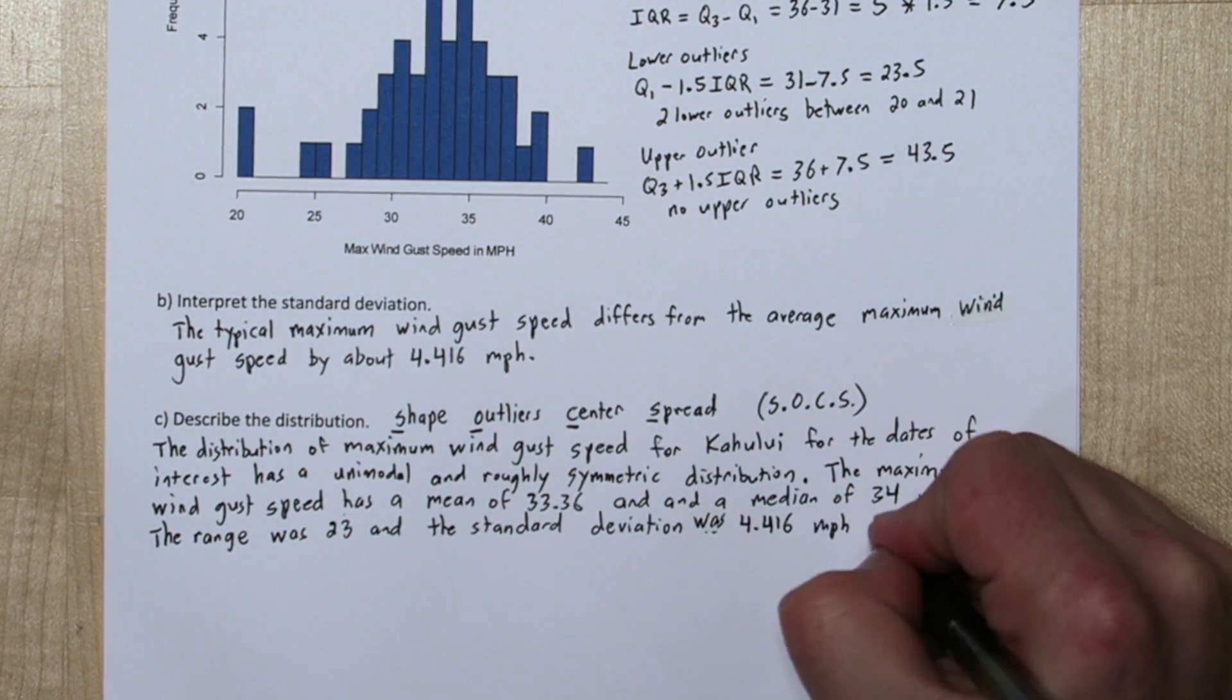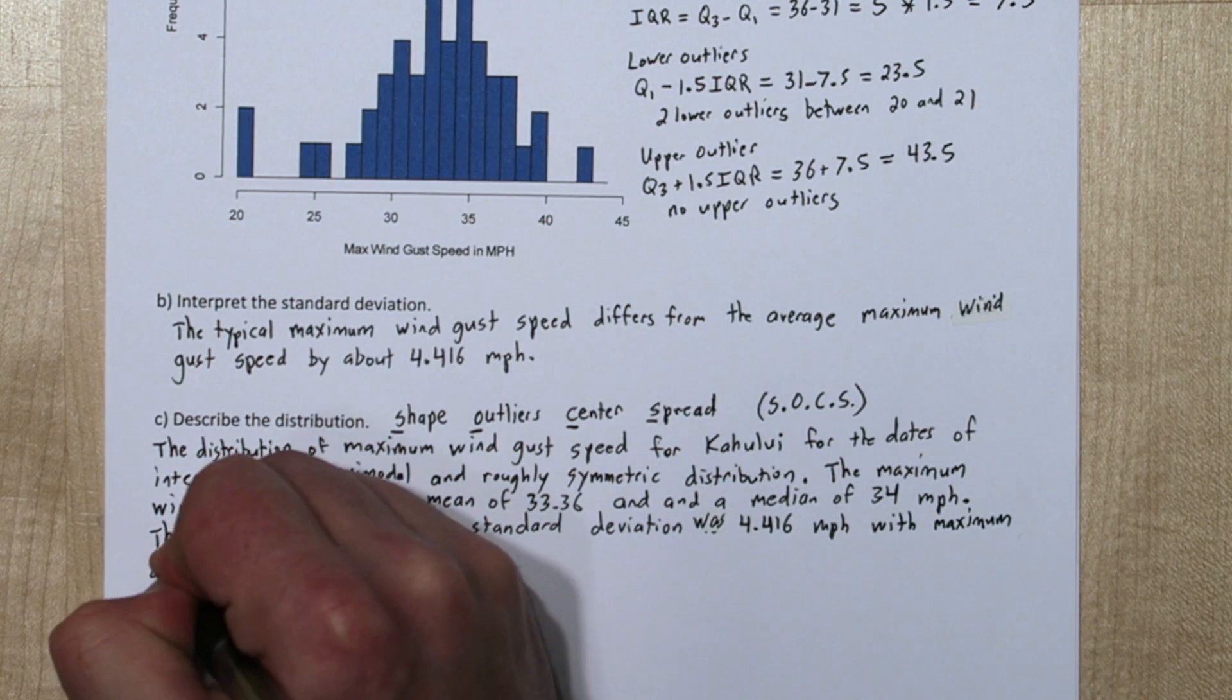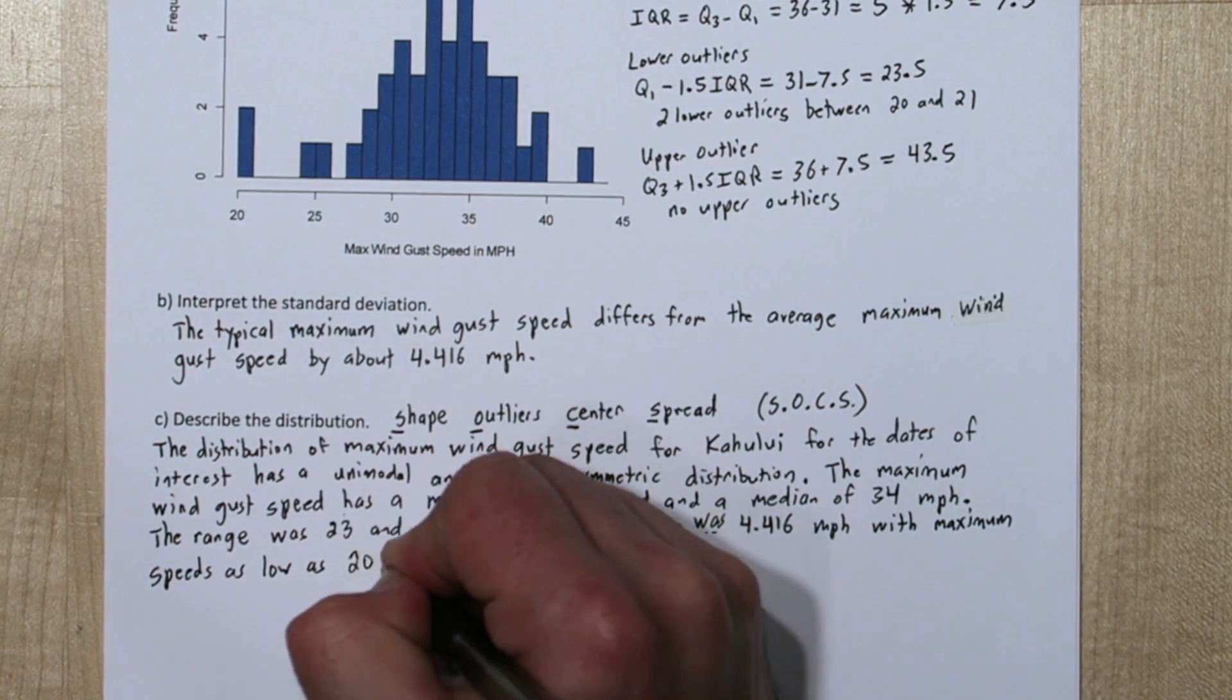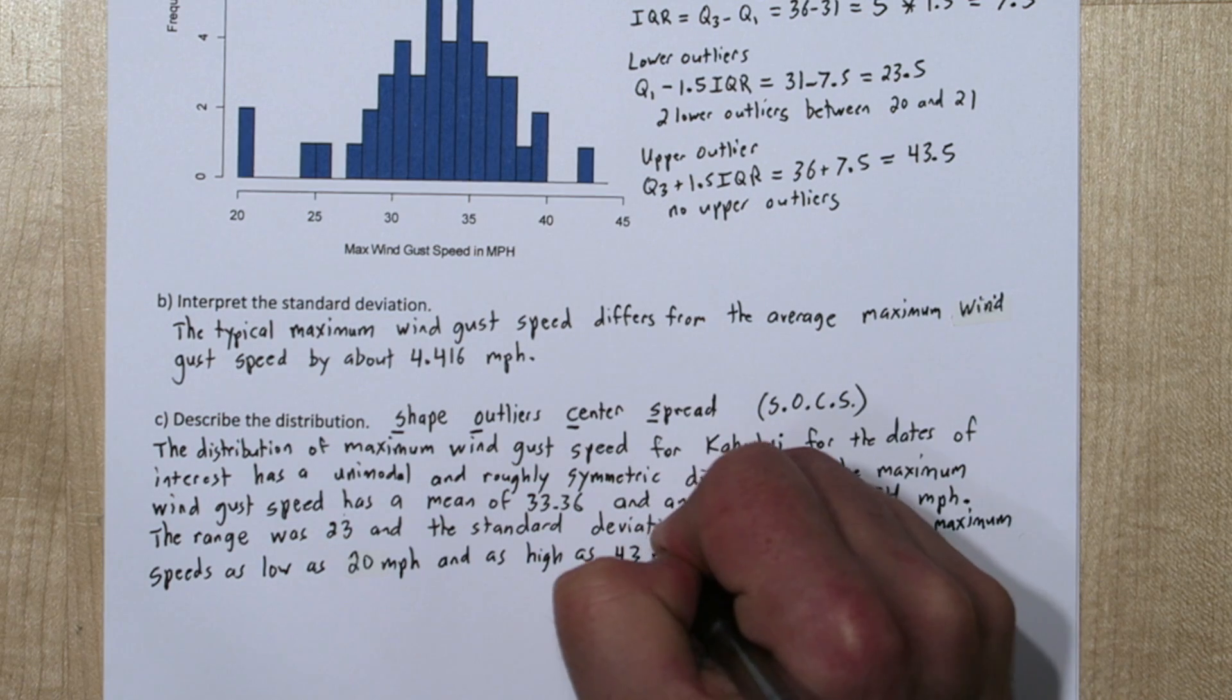We can also talk about the minimum and maximum. There was maximum speeds as low as 20 mph, which sounds strange but it's the daily maximum wind gust speed, and as high as 43 mph.